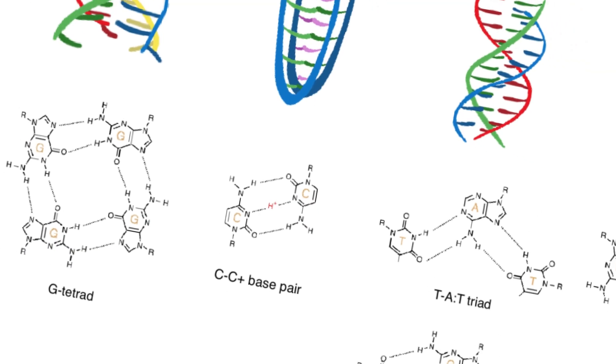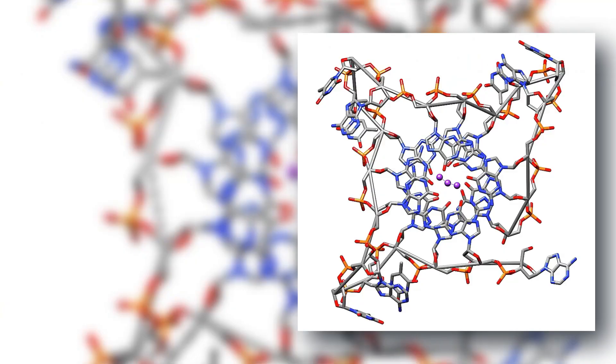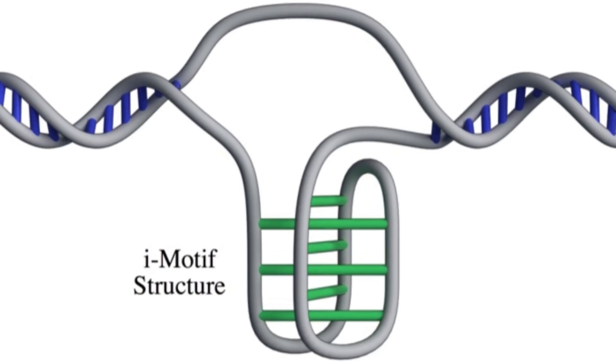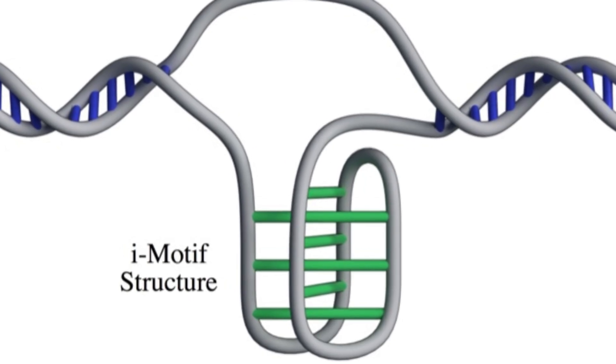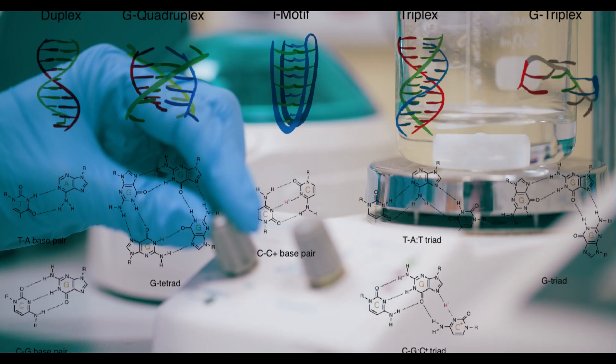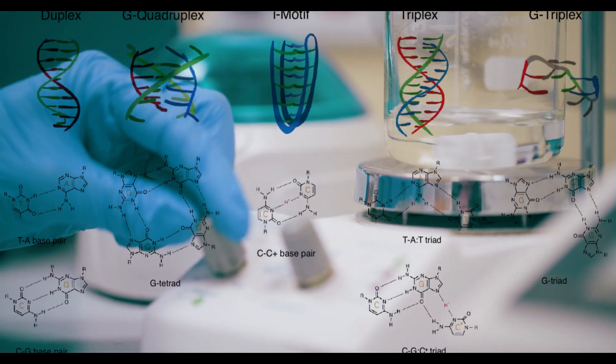DNA can also fold into exotic shapes. One example is the G-quadruplex, a four-stranded knot that often appears at the ends of chromosomes. Another is the I-motif, a twisted structure that forms under certain chemical conditions. These unusual forms may hold secrets for cancer research and new medicines.